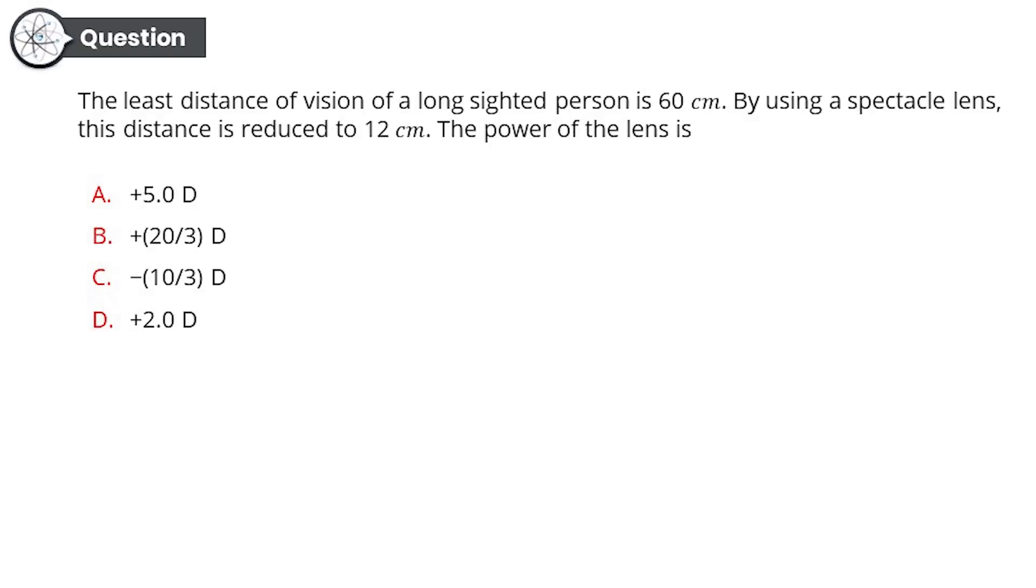Moving on to a very, very amazingly easy question. The least distance of vision of a long-sighted person is 60 cm. By using a spectacle lens, this distance is reduced to 12 cm. Then the power of the lens is: